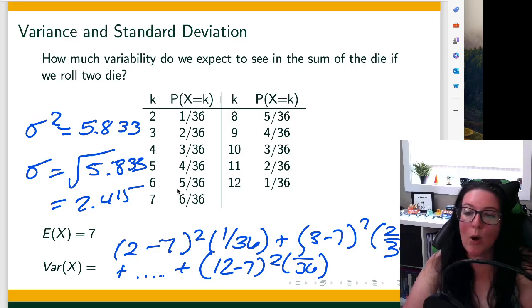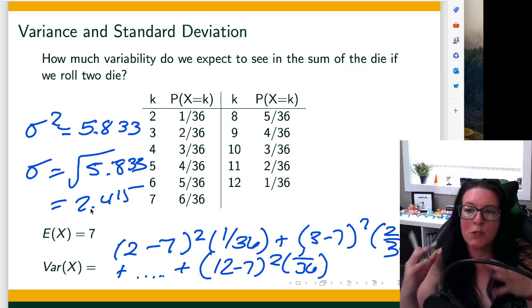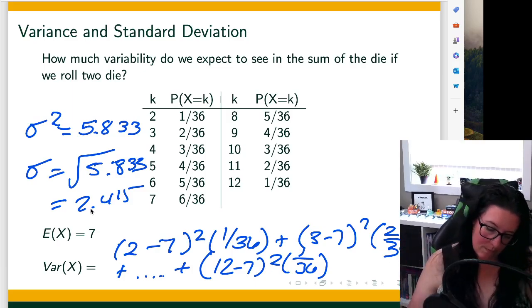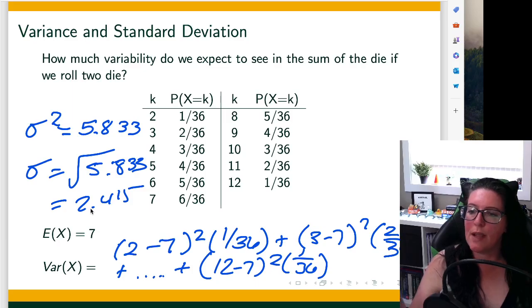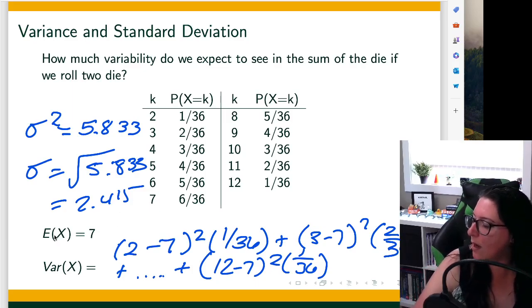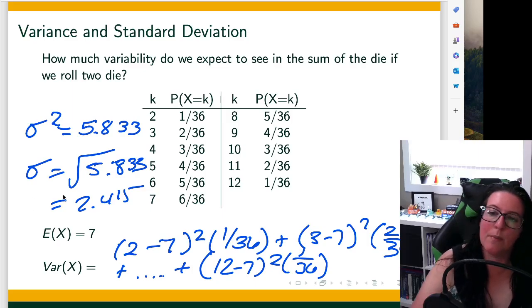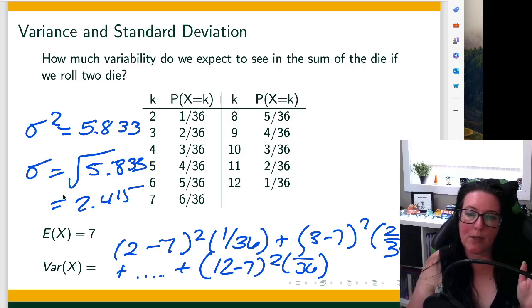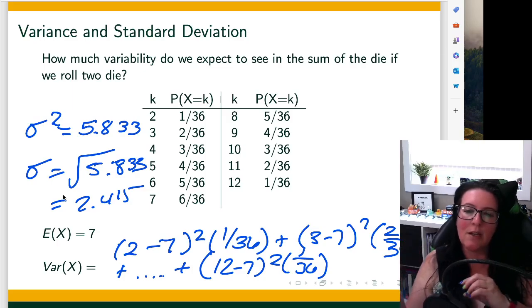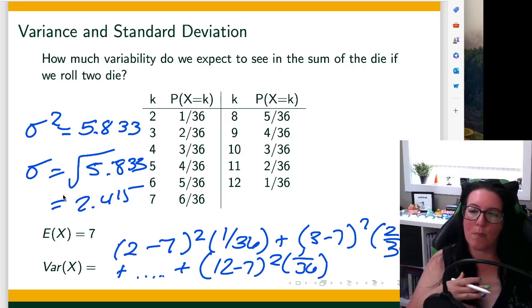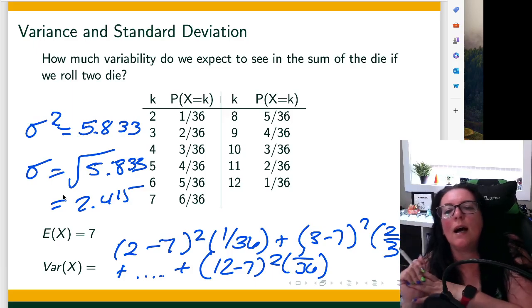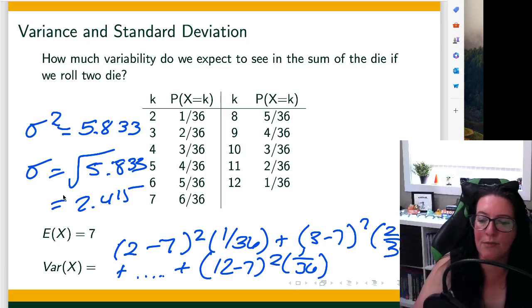So how much variability? The standard deviation tells us that the majority of the variation is within one standard deviation, and so here expected value is 7. The majority of the numbers are going to be within 2 of that in either direction. So we're going to 4.6 up to 9.4 is where the majority of the results are going to be.